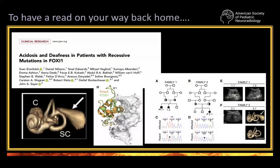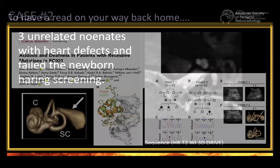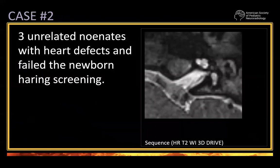Remember that Pendred syndrome is characterized by enlarged vestibular aqueduct, often — not always — associated with incomplete partition type 2. Sometimes you also have dilatation of the vestibule, which we call the Mondini triad. This is the paper that the group at Great Ormond Street, my hospital, wrote about FOXI1. I will give you some references.